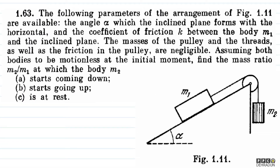So let's try to understand the question. Basically, an inclined plane has angle alpha, and there are two objects M1 and M2. M2 is hanging and M1 is on the inclined plane. Both are connected by a string passing over a pulley. The pulley and string are massless, ideal, and frictionless.